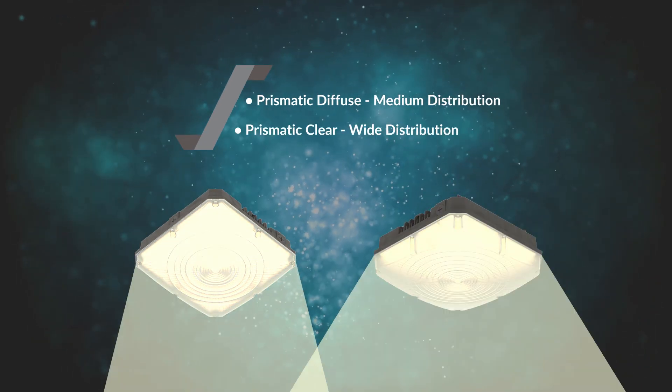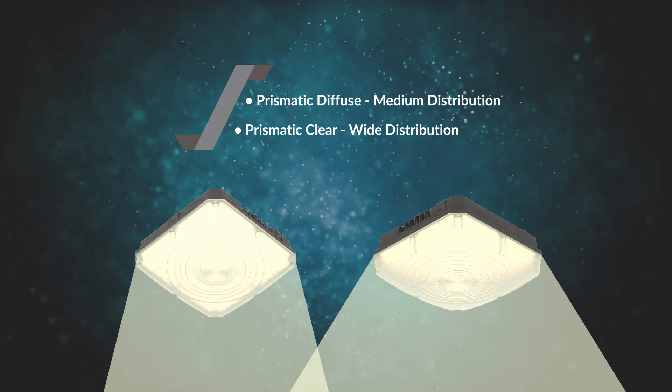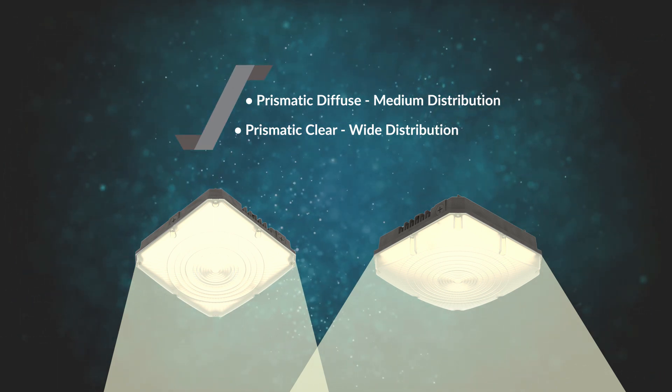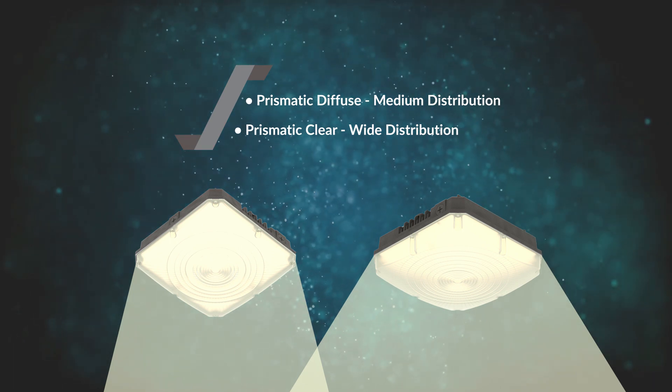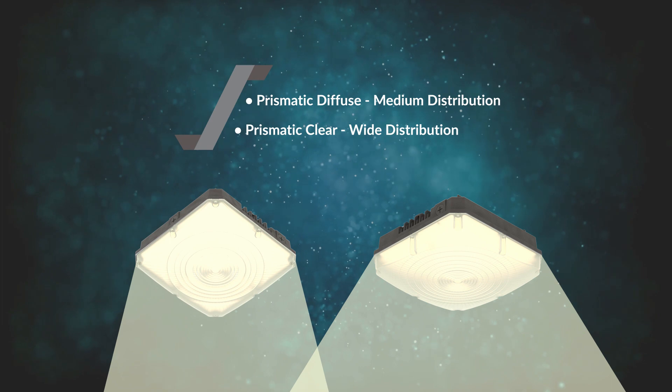The standard prismatic diffused lens eliminates glare and optimizes the delivered light for visually comfortable illumination, while the optional wide distribution lens was specifically designed for parking garage applications to maximize fixture spacing.